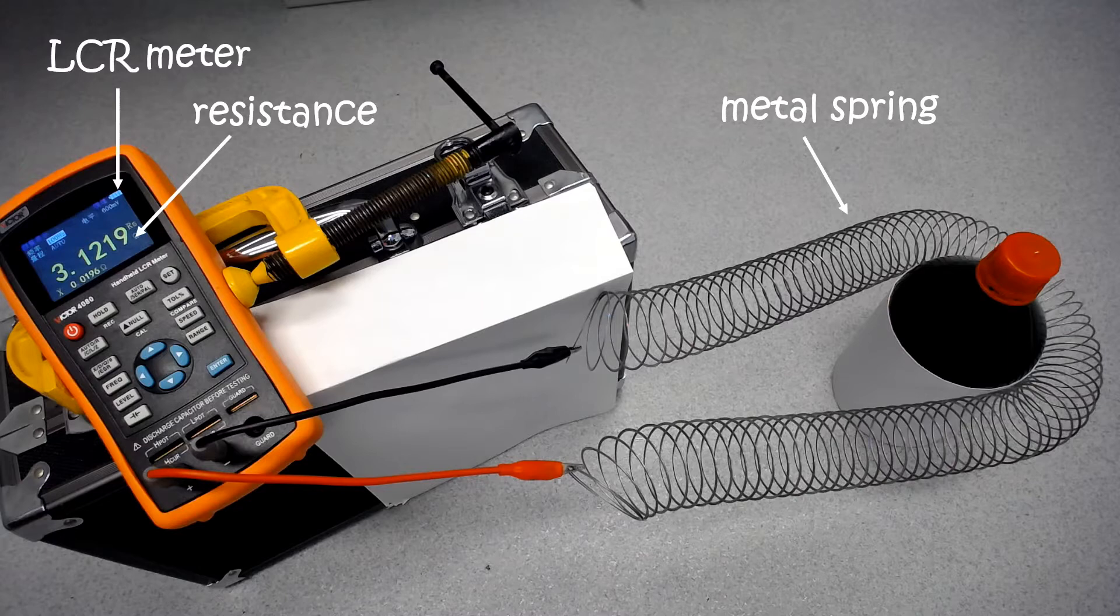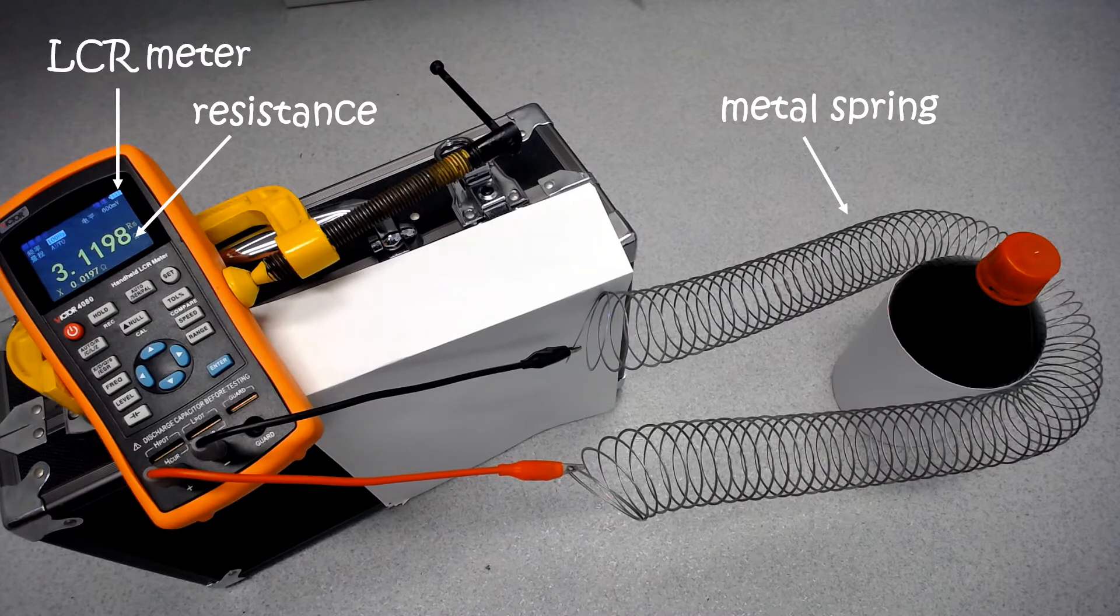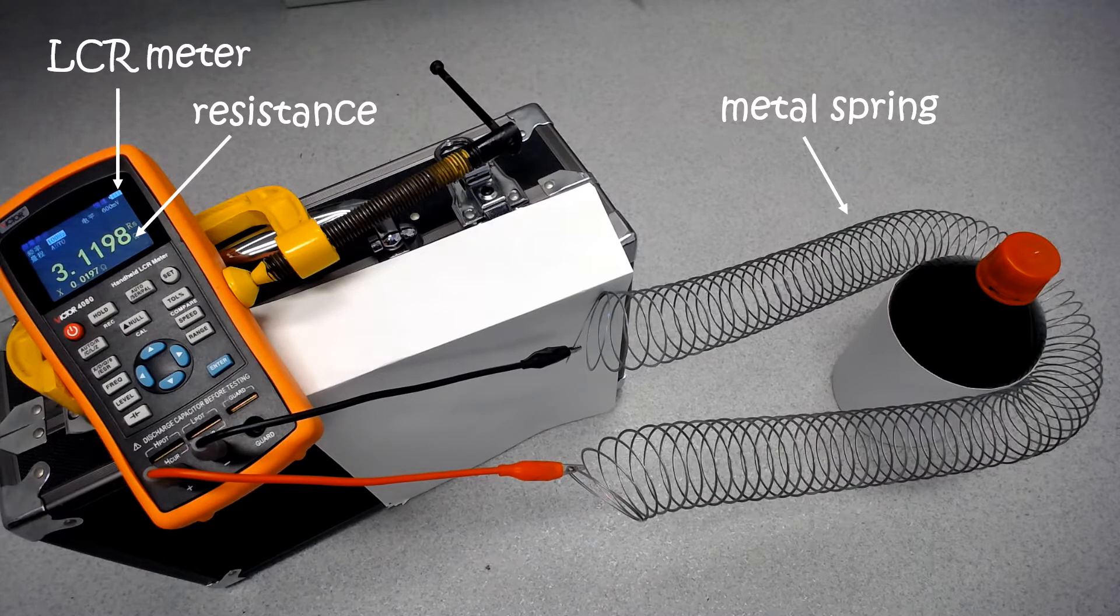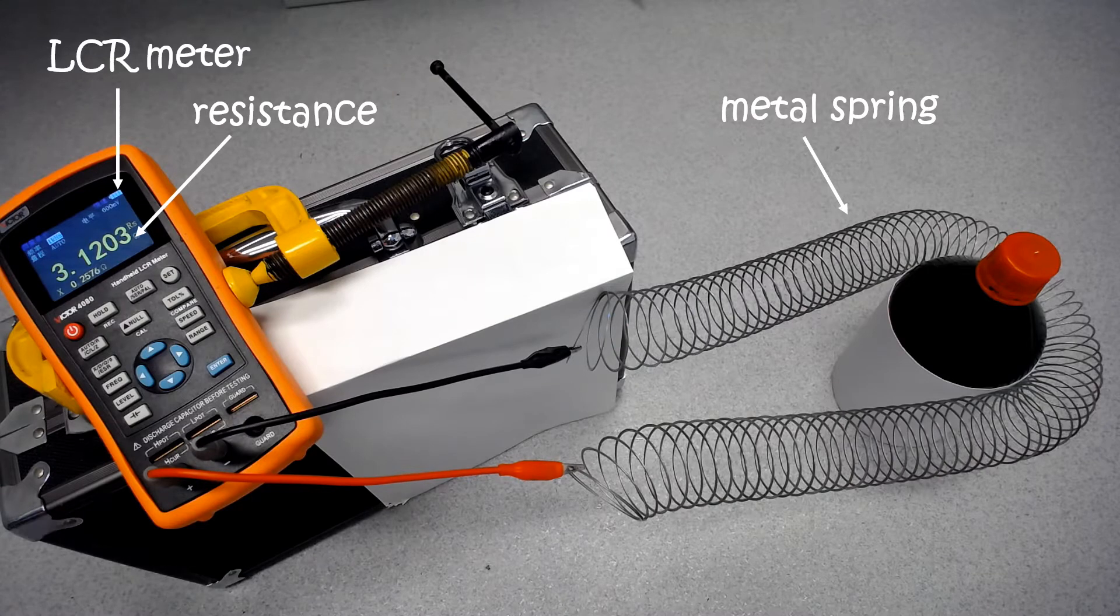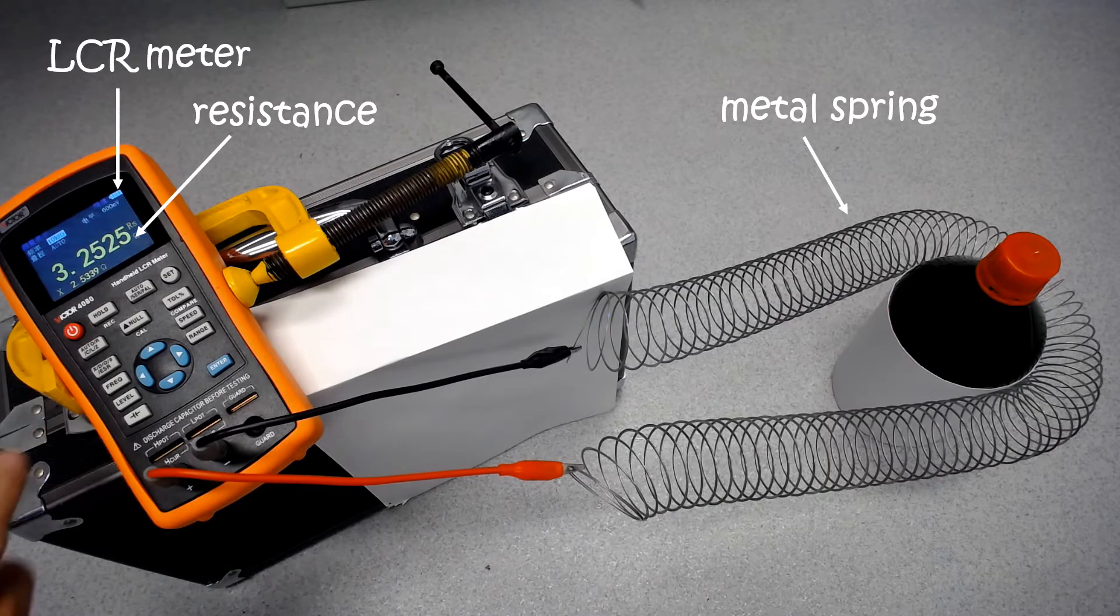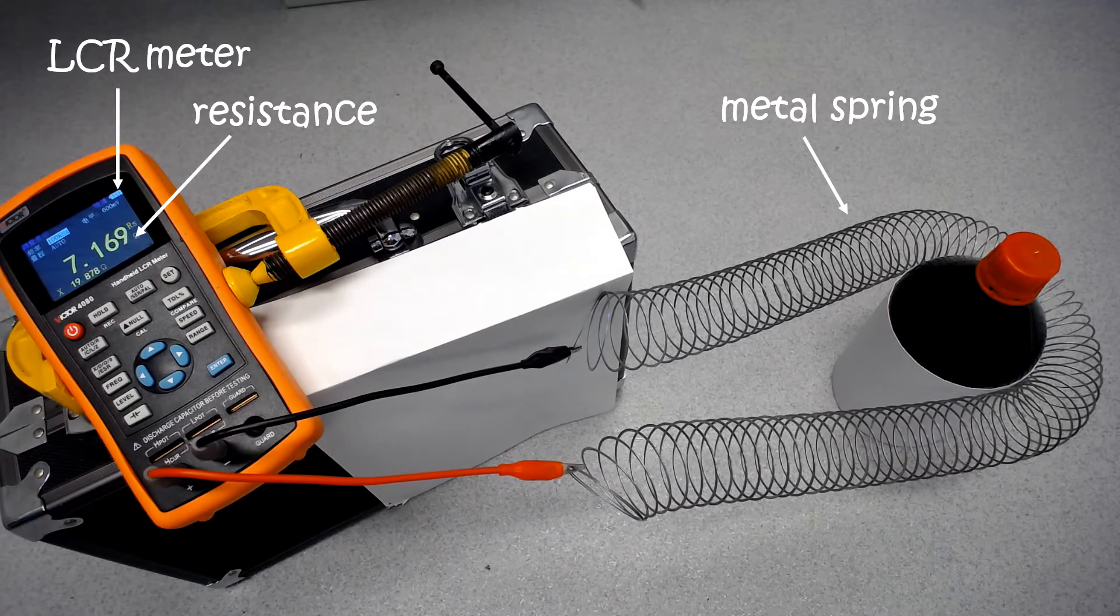Without touching the wire, I can change the resistance by just changing the setting on the LCR meter, like this. We see that the resistance has increased after I change the setting.